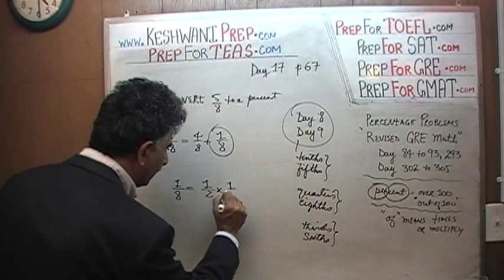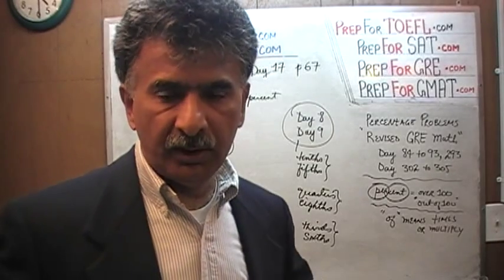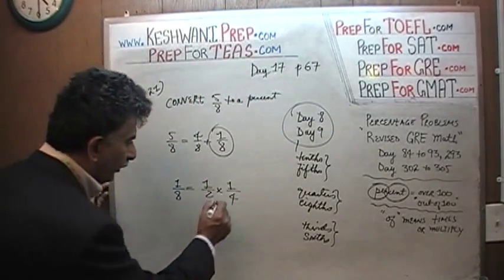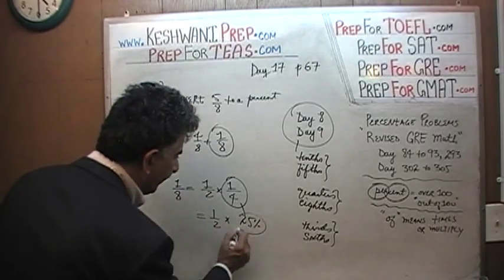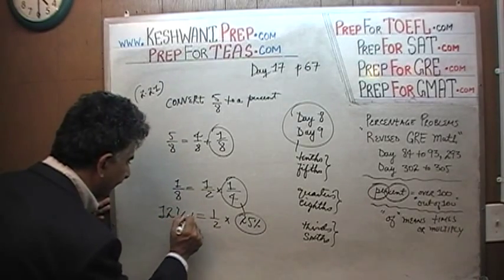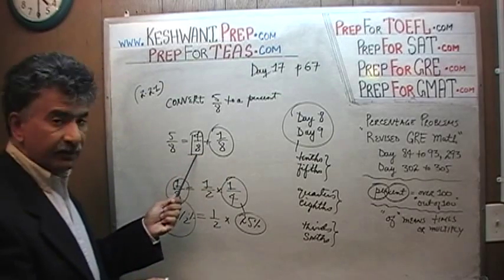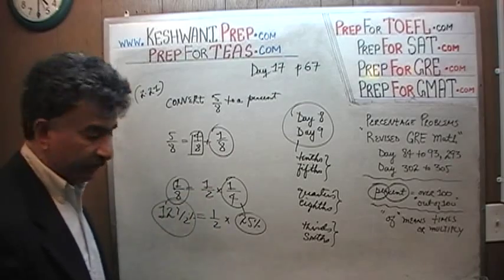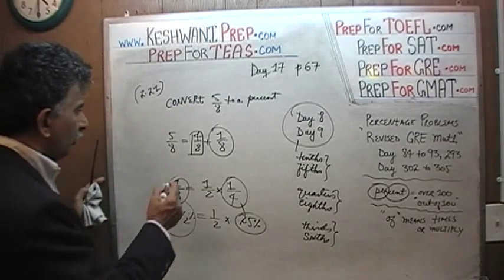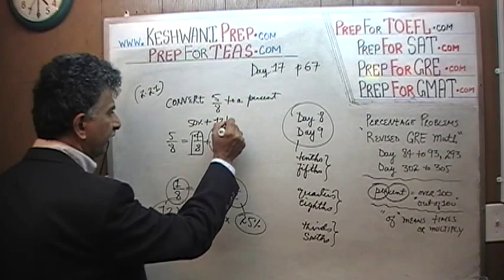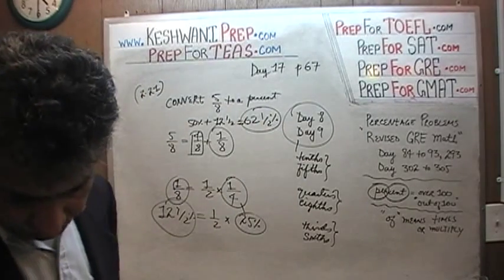1/8 is just half of 1/4. Half of 1/4 is 1/8 — of course, if you have a quarter of a slice and you cut even a quarter of a slice into two parts, you've got an eighth of a pizza. We already know that 1/4 is 25%. So the question is, what is half of 25? Half of 25% would be 12.5%. That's it. And 1/8 is 12.5%. And 4/8 is just a half, which is 50%, plus 12.5%. So altogether it's going to be 62.5%. The answer is 62.5%.